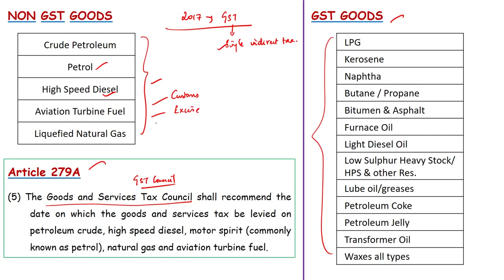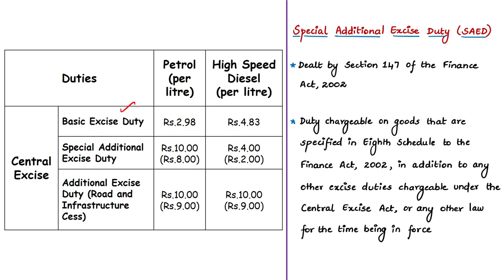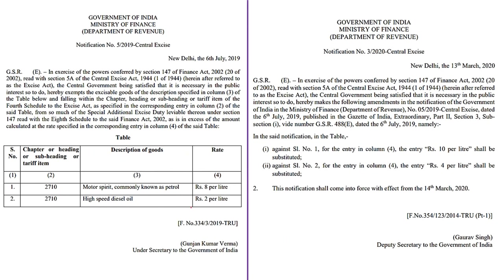Currently, for these five petroleum products, indirect taxes like customs duty and excise duty are levied at the central level, and VAT (value added tax) is levied by each state. There are different types of excise duty: basic excise duty, special additional excise duty, and additional excise duty — also known as the road and infrastructure cess. The news article tells that both the special additional excise duty and additional excise duty have been increased by the central government.